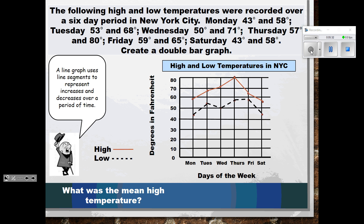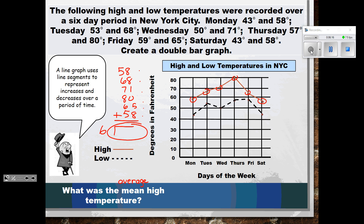Now let's look at how we can interpret some of this information. What is the mean high temperature? Mean means average — to find the average, we add together all the numbers and divide by how many numbers there are. We had six days, so we add the high temperatures: 58, 68, 71, 80, 65, and 58, then divide by six. We find that the average high temperature was 67 degrees.